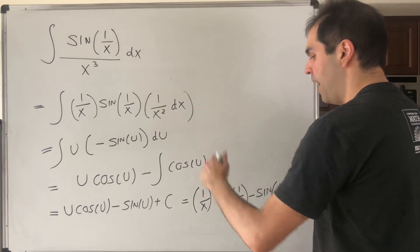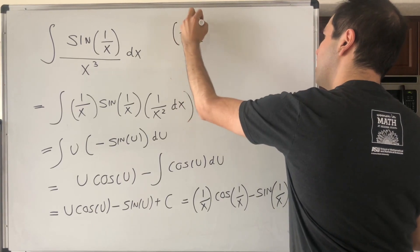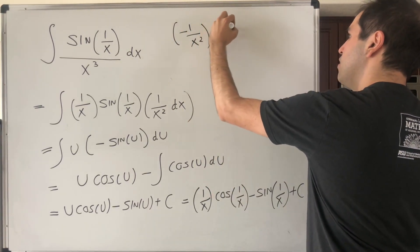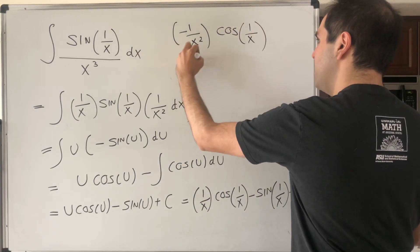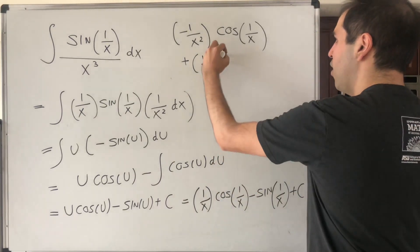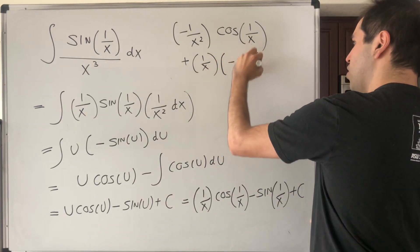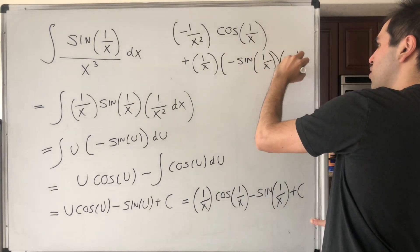So we get minus 1 over x squared, x squared cosine of 1 over x, and then plus 1 over x. Then minus sine of 1 over x and then times minus 1 over x squared.